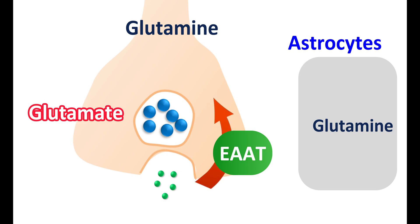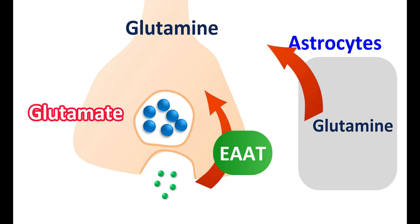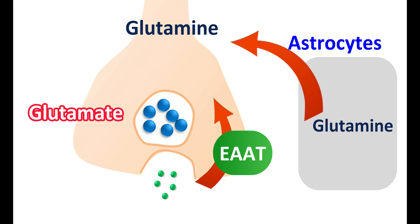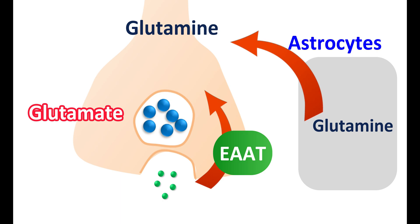Glutamine acts as a storage form of glutamate within non-neuronal cells like astrocytes. This glutamine is then transported back into neurons for recycling of glutamate, facilitated by glutamine transporters expressed on both astrocytes and neurons. Inside the neuron, glutamine is converted back to glutamate by glutaminase, so glutamate is synthesized, released, and recycled in a cyclic manner.